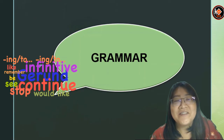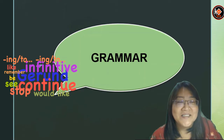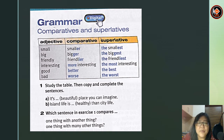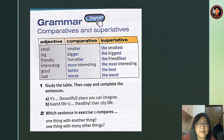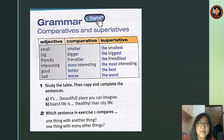Let's begin the grammar lesson. Dear students, for grammar we are learning comparative and superlative. Here you have adjectives like small, big, friendly, interesting, good, and bad. Comparative forms: smaller, bigger, friendlier, more interesting, better, and worse. Superlative forms: the smallest, the biggest, the friendliest, the most interesting, the best, and the worst.